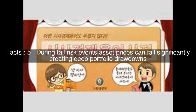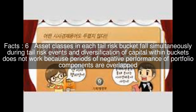During tail risk events, asset prices can fall significantly, creating deep portfolio drawdowns. Asset classes in each tail risk bucket fall simultaneously during tail risk events, and diversification of capital within buckets does not work because periods of negative performance of portfolio components are overlapped.